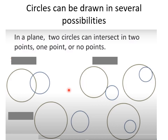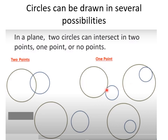In the first figure, the two circles intersect in two points. In the second and third figures, they intersect in one point. In the last two figures, as you can see, they do not intersect at all — they have no common points.